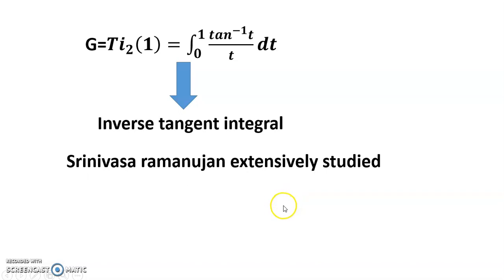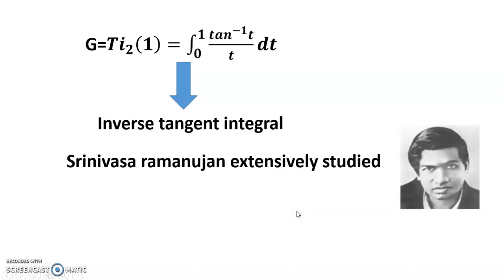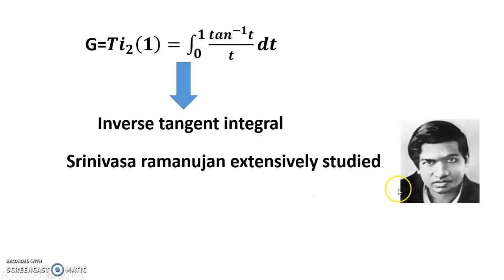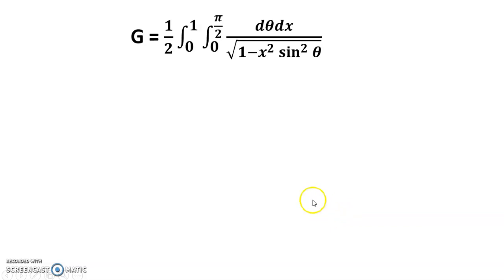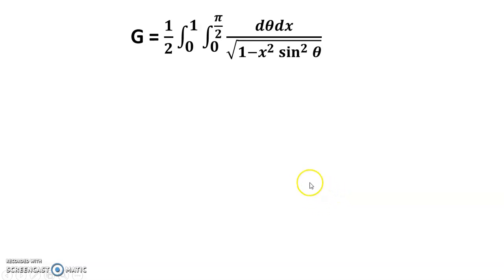Srinivasa Ramanujan extensively studied the Catalan constant. One of his representations is: G equals one-half times the double integral from 0 to 1 and 0 to pi/2 of d-theta dx divided by the square root of 1 minus x-squared sin-squared theta.